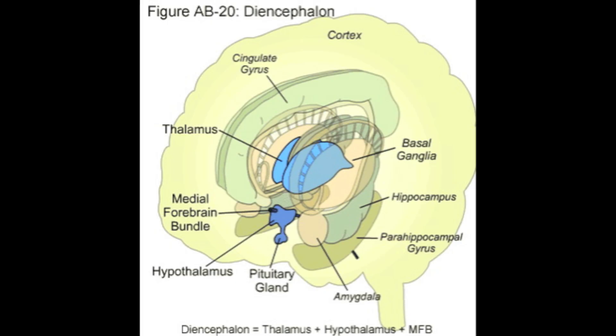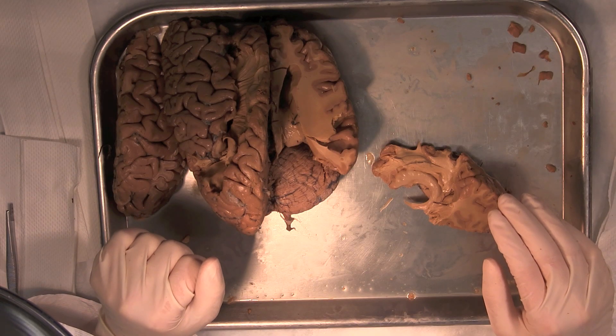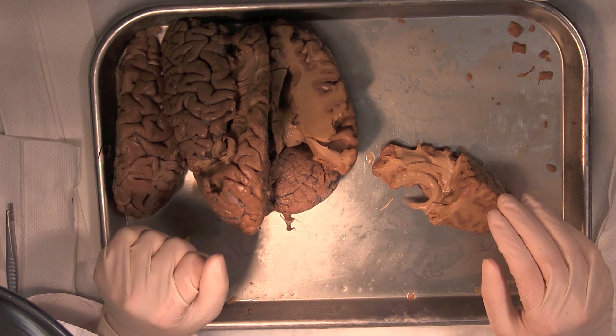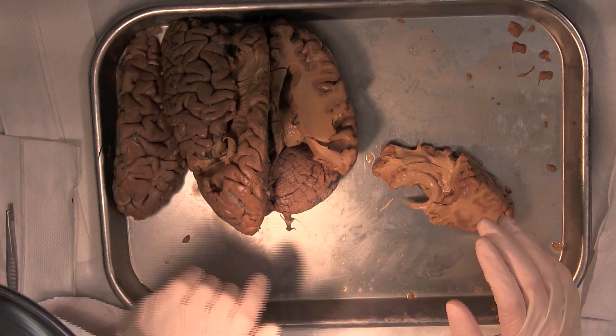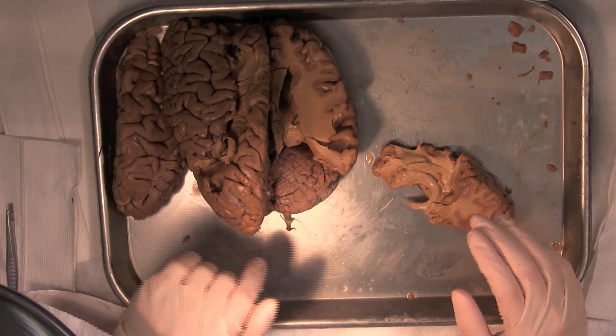The basal ganglia is a very complex but primitive area of the brain — primitive because it was one of the first areas of the brain to evolve in animals. The basal ganglia handles lots of automated functions, and damage to it can render people motionless and without motivation, as is seen with Parkinson's patients. The basal ganglia is important for many functions including motor decisions and control, and habit and motor learning.